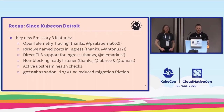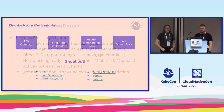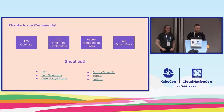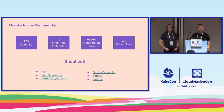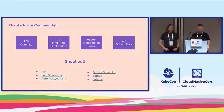This makes sense for folks just starting out who are already adopting V3 — we recommend the V3 Alpha, the latest, as shown in our docs. Since KubeCon, we've had 175 commits and 10 first-time contributors. We have 9,000 members in our Slack channel and 4K GitHub stars. A shout-out to Pierre, Paul, Anton, Dimitri, and Tomas-Ferruti for their recent pull requests and commits.